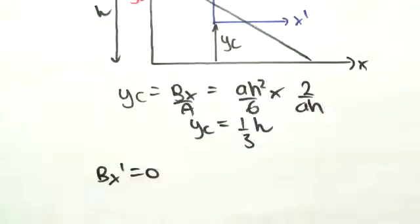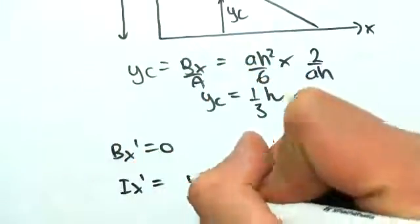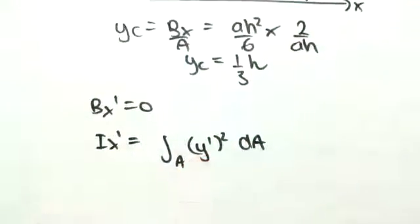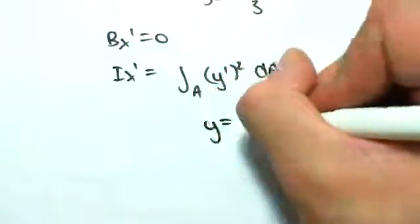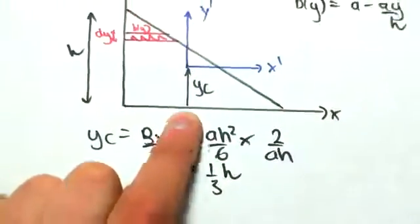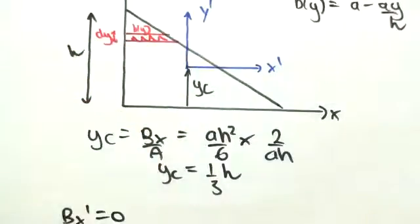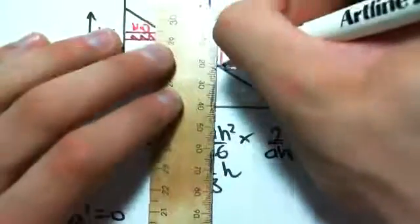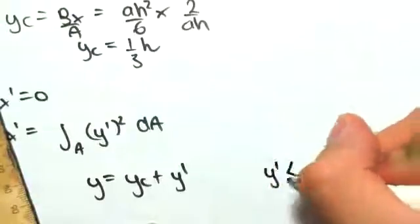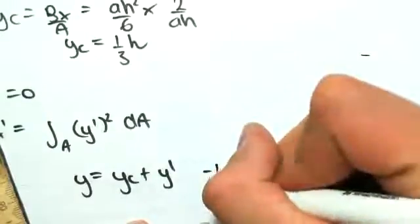But for the next thing, we need to be solving the second moment of area, ix dash, which equals the integral of a y dash squared dA. So we need to come up with a function for y dash now. What I'm going to do is write that y equals yc plus y dash. So all that means is that from our reference axis y, it is the same as yc, so that component there, plus y dash. So y dash would be up down there, up or down there.